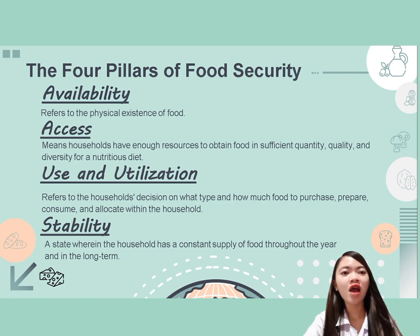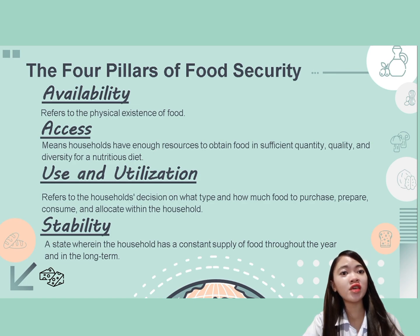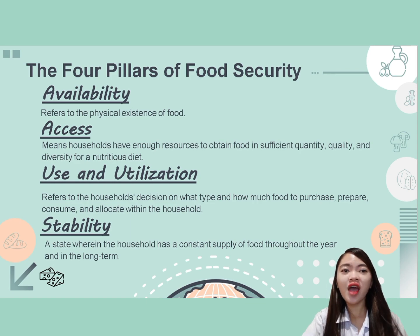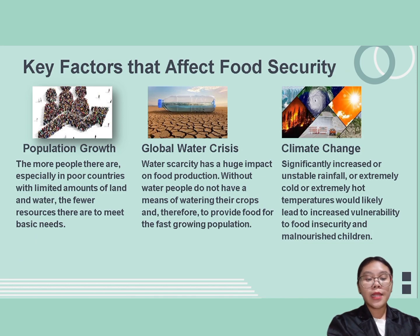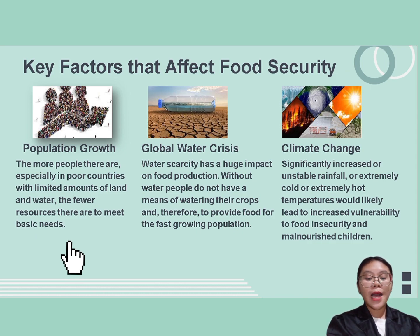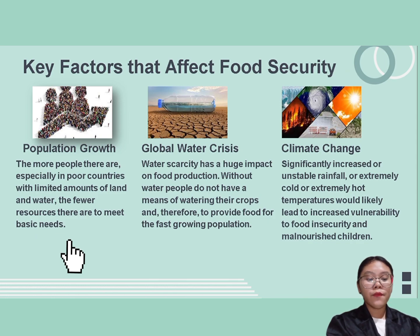To discuss the key factors that affect food security, we call on Ms. Bernadette Amogis. The key factors that affect food security — first is population growth. Simply put, this is the continuous increase of population in a country. Along with this comes the continuous rise in demand for basic necessities such as food and water, resulting in the gradual depletion of resources.